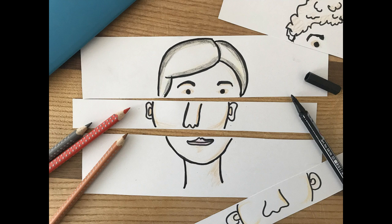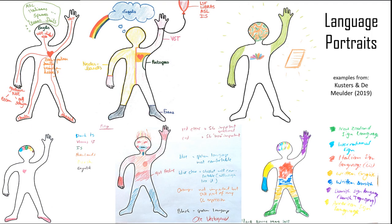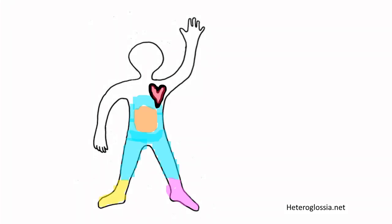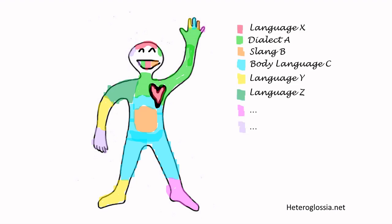Maybe it's difficult to put into words — it may be unconscious. So let me explain a visual method called language portraits. This powerful tool can be thought of as didactic material, a reflective exercise, or even thought-provoking artwork. You start with a blank silhouette of a body and fill it in with different colors, locating your various languages onto or outside the body.